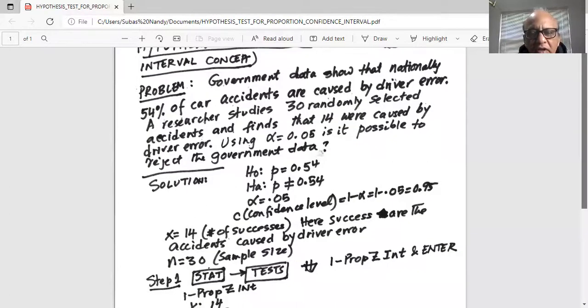So the confidence level that we have in our test is 1 minus the significance level, or 1 minus 0.05 is 0.95.